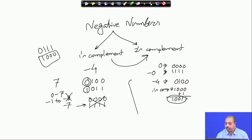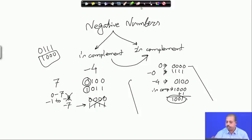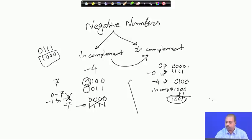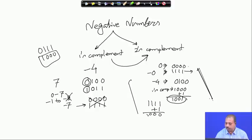This two's complement representation does not suffer from the plus 0 minus 0 problem. Plus 0 is represented by all zeros. If we try to represent minus 0, we take the one's complement to get 1 1 1 1, then for two's complement we add 1. When we do this addition all these bits become 0 with a carry of 1. If we discard this carry it becomes 0. So both plus 0 and minus 0 are represented by the same number, all zeros, making negative number representation clean.